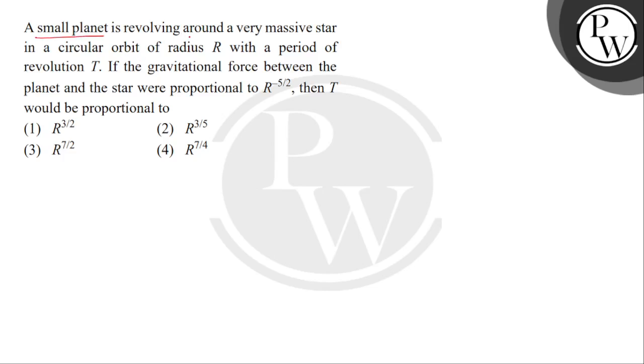A small planet is revolving around a very massive star in a circular orbit of radius R with a period of revolution T. If the gravitational force between the planet and the star were proportional to r to the power minus 5 by 2, then T would be proportional to...